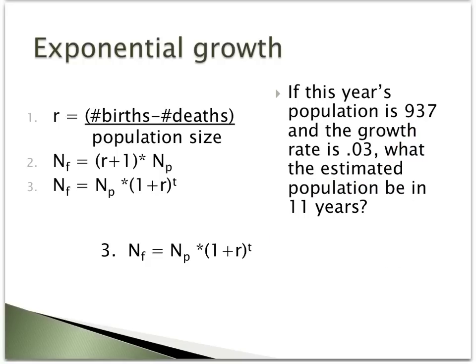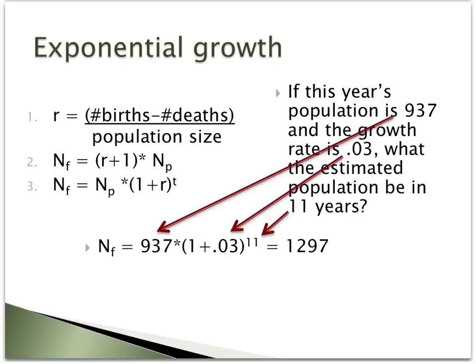If instead you want to estimate the size of the population 11 years down the road, you'd need to use equation number three. It takes into account the same factors, except it involves the units of time, or t. If you multiply 937, the current year's population, times (1 + 0.03) to the 11th power, the projected population size would be 1,297.